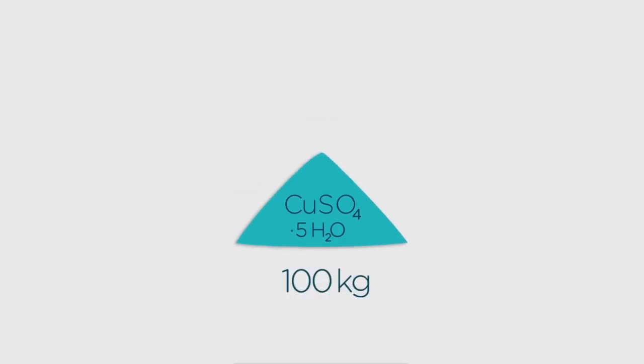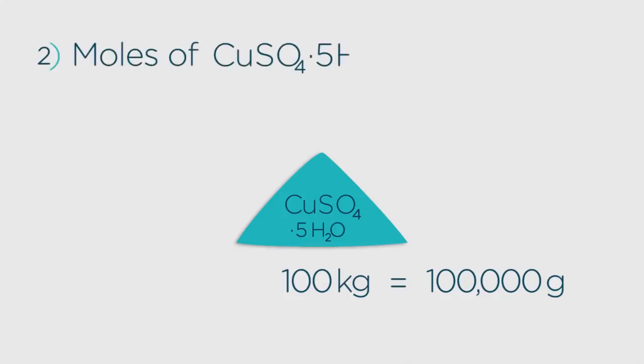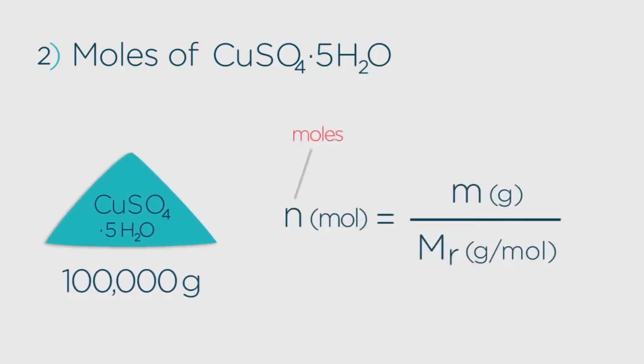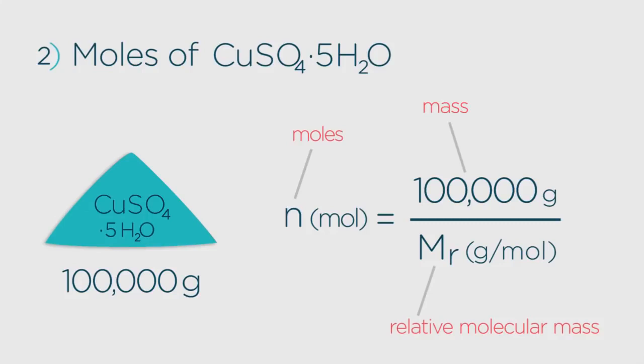100 kilograms or 100,000 grams of the copper sulfate are required. We need to know how many moles of the product this represents and here's where the equation comes in. The number of moles needed equals the desired mass, 100,000 grams, divided by the relative molecular mass of the product we want, copper sulfate.